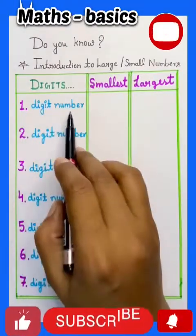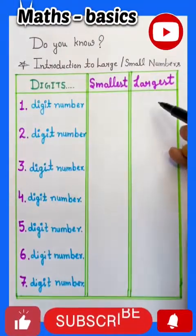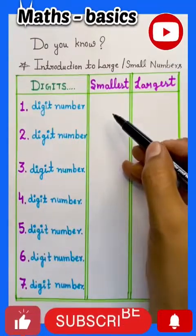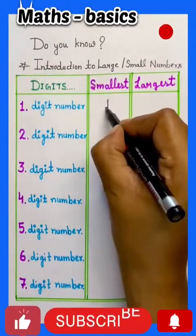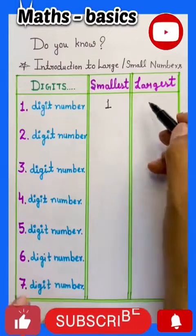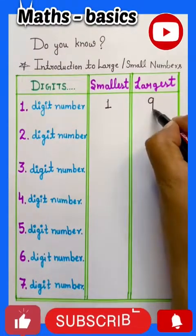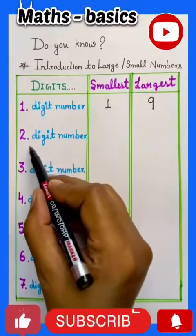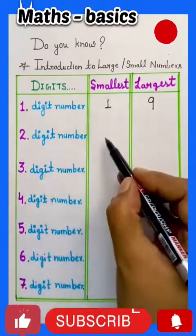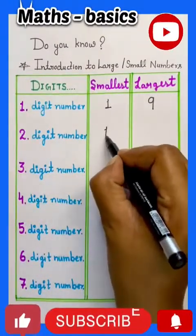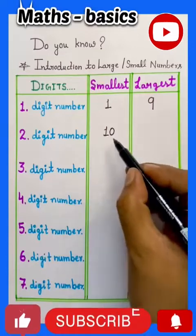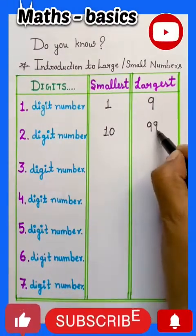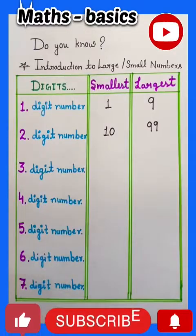One digit number: smallest and largest. Friends, what is the one digit smallest number? One is the smallest number and nine is the one digit largest number. Similarly, the two digit smallest number is one zero, means ten, and the largest number is nine nine, means ninety nine.